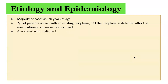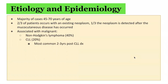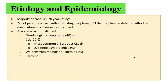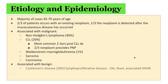What conditions are associated with paraneoplastic pemphigus? There are a number of malignant diseases, including non-Hodgkin's lymphoma in 40% of cases, CLL in 20%, most commonly presenting two to three years after the diagnosis of CLL. Two thirds of neoplasms precede paraneoplastic pemphigus. Waldenström macroglobulinemia is associated in 1% of cases. Other associations include sarcoma and carcinoma. More benign conditions include Castleman's disease in 20%, which is a lymphoproliferative disease associated with large lymph nodes, fevers, and HHV-8 infection. Castleman's disease is the most common cause in children. It is also associated with thymoma, though Castleman's disease is more common than thymoma as an association with paraneoplastic pemphigus.